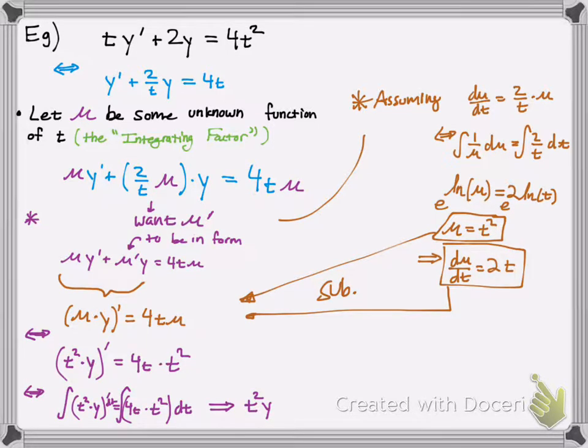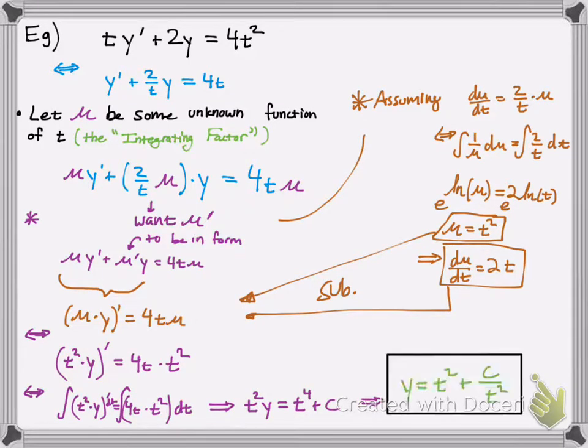You'd get t squared y equals t to the fourth plus c, and we divide both sides by t squared, and we get our general solution. And that, my friends, is the integrating factor method.